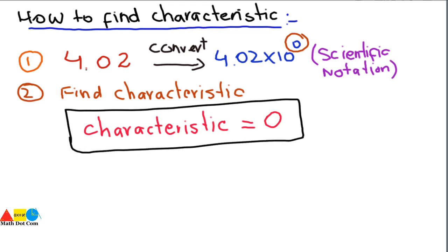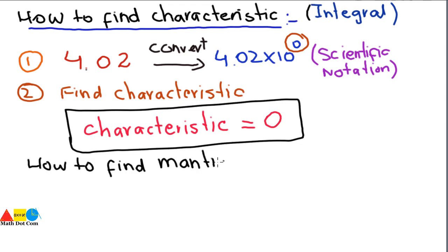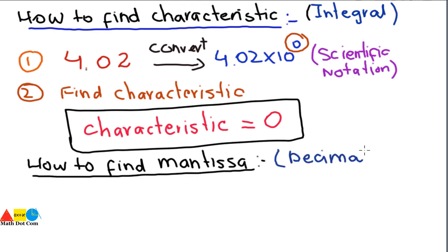The next step is to find the mantissa — that is, the decimal part of the common logarithm. To find the mantissa, you use a log table. I will show you how the table looks and how you can find the logarithm using it.